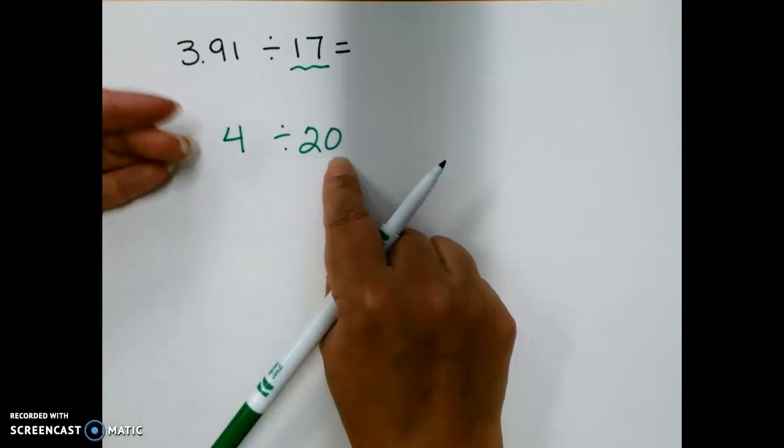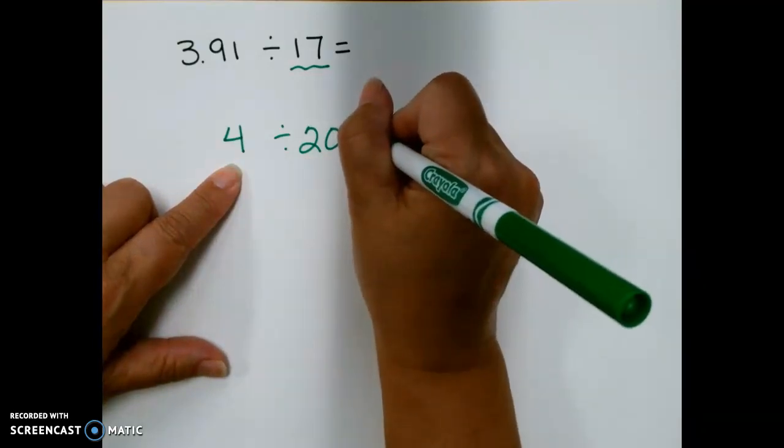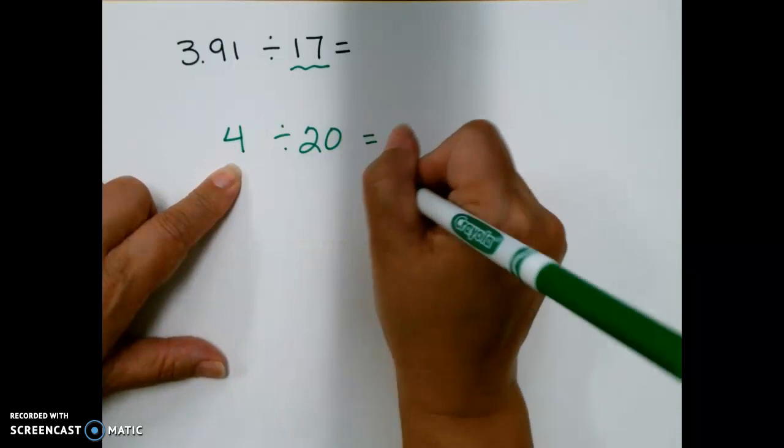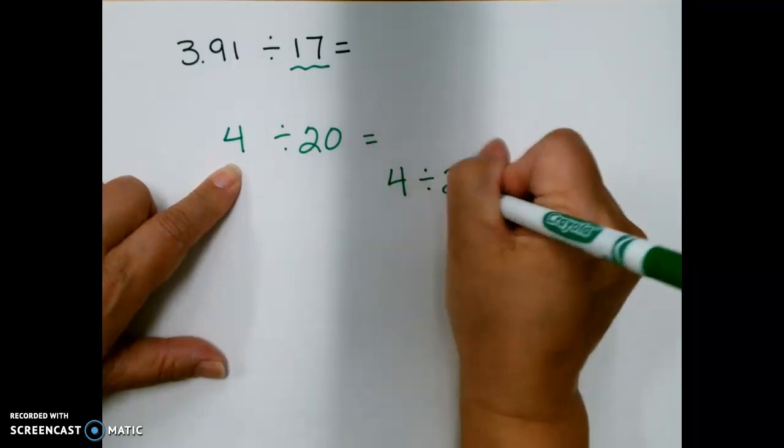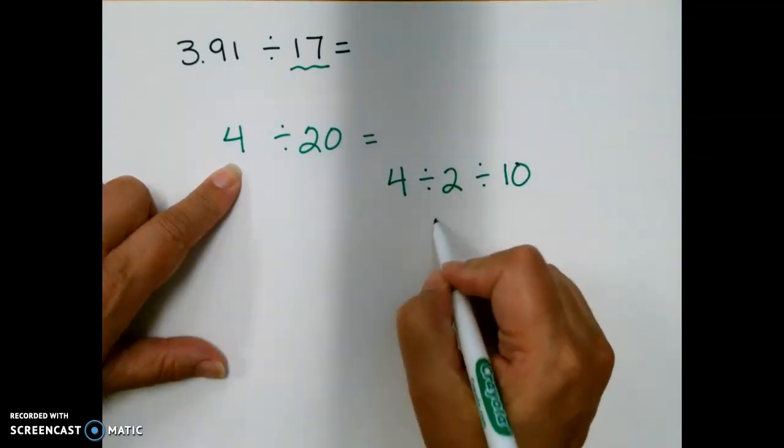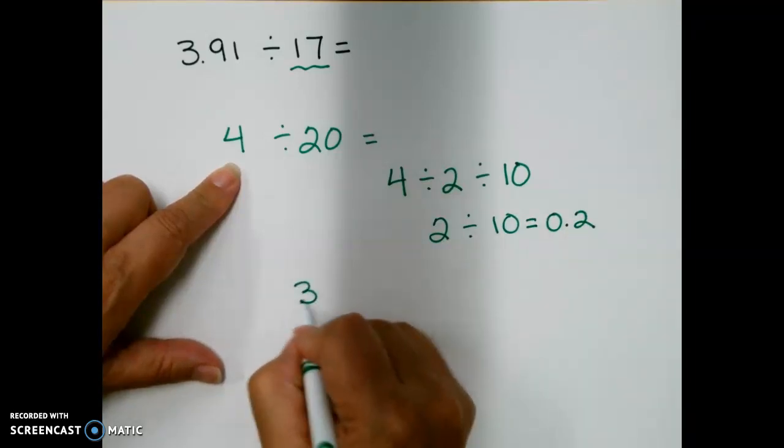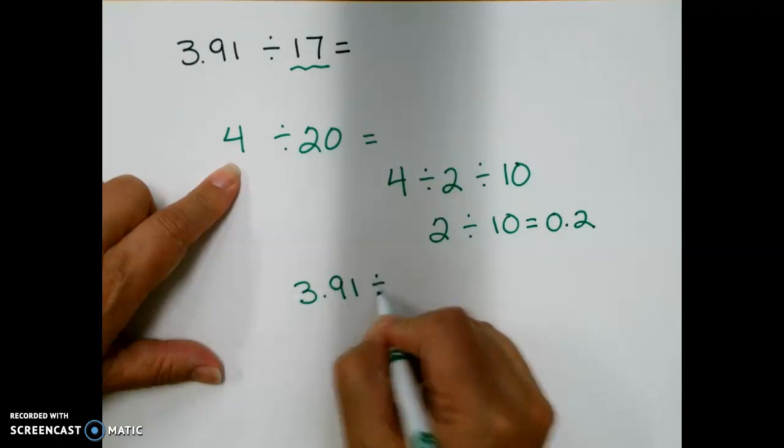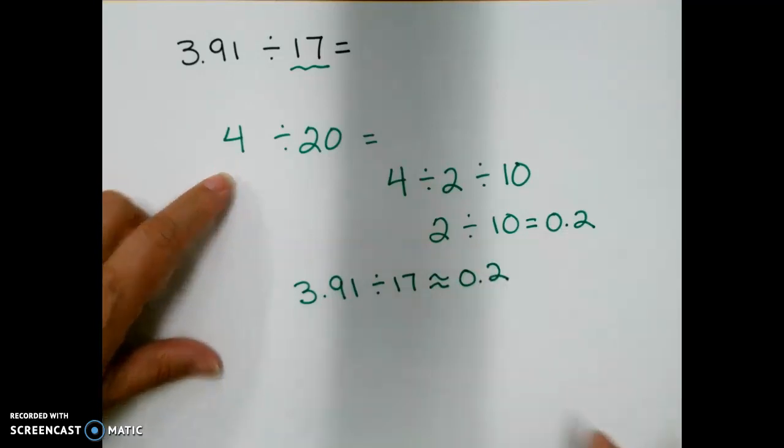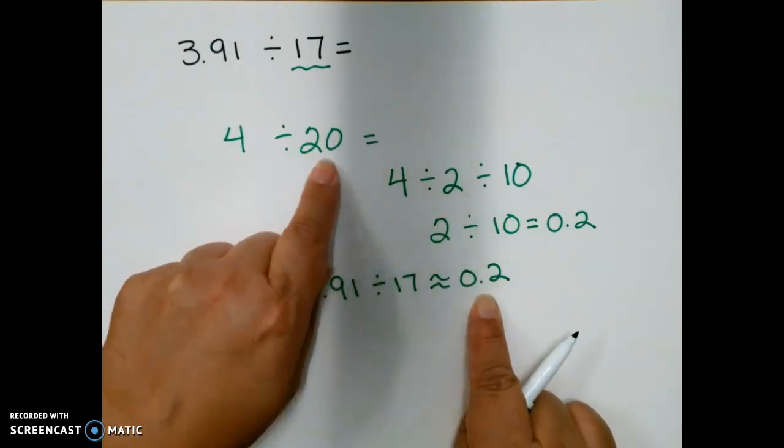Remember what we did yesterday? I could do 4 divided by 2 divided by 10. So, if I do 4 divided by 2 divided by 10, 4 divided by 2 is 2 and 2 divided by 10 is 2 tenths. So, 3.91 divided by 17 is about 2 tenths. And I know this is the right place to put my decimal point because I'm dividing by a multiple of 10.